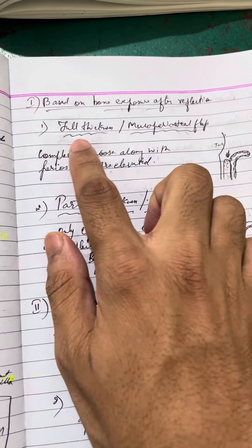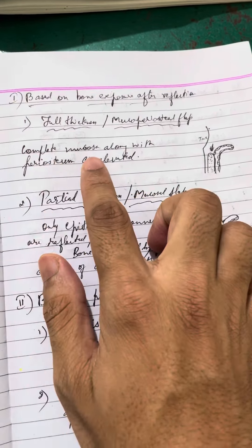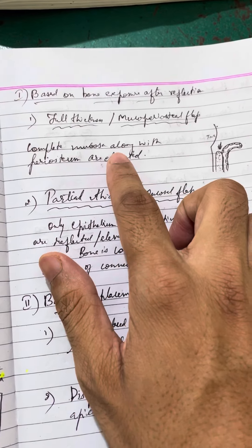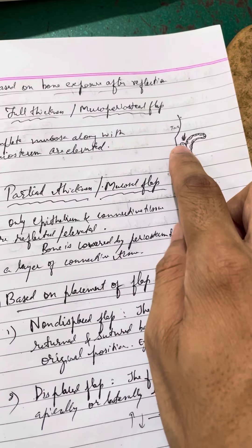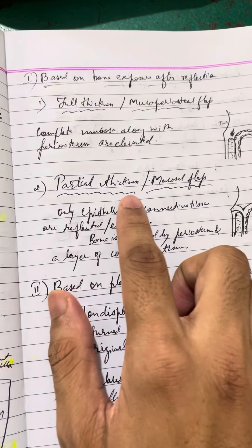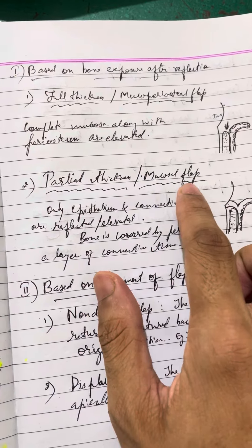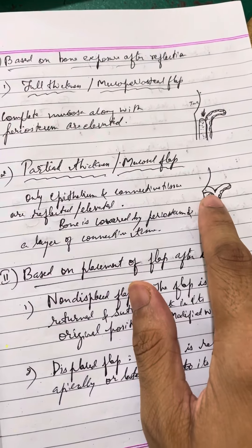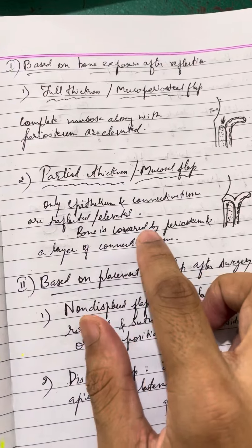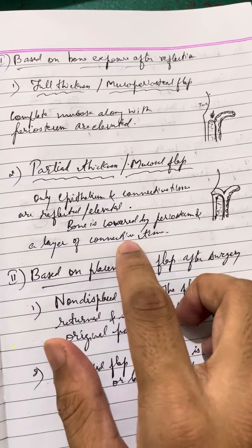Full thickness flap or mucoperiosteal flap: the complete mucosa or gingiva is elevated along with periosteum, and the bone is exposed. Partial thickness flap or mucosal flap: only the epithelium and connective tissue are reflected; here, bone is covered by periosteum and a layer of connective tissue.